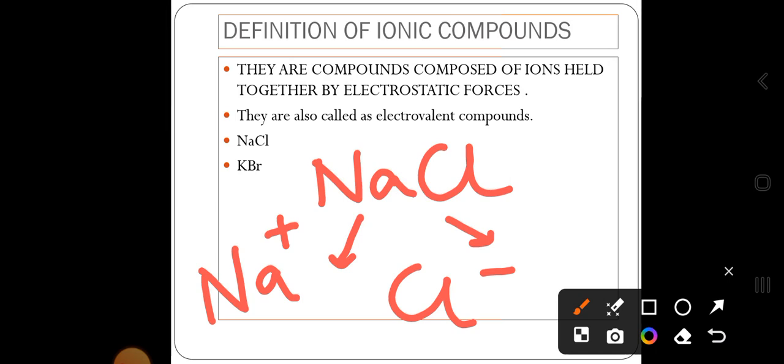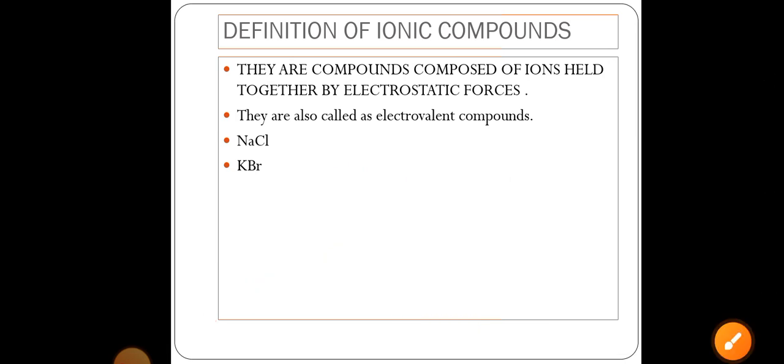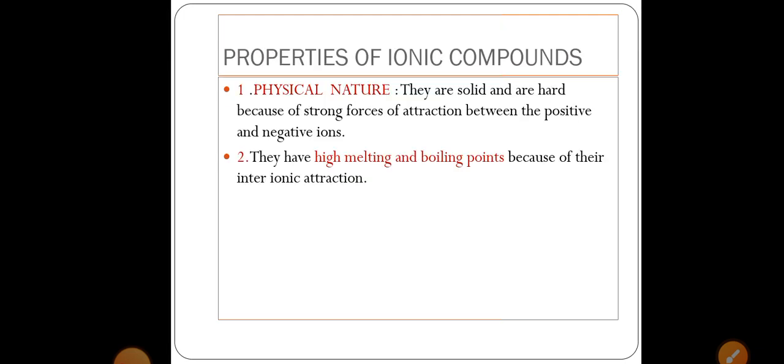More examples would be KBr, calcium oxide, and so on. Another name for ionic compounds is electrovalent compounds. Now let's head towards the properties of ionic compounds. First one - physical nature. Because of their electrostatic force of attraction, their nature of bonding makes them very strong. They are solids and also hard.